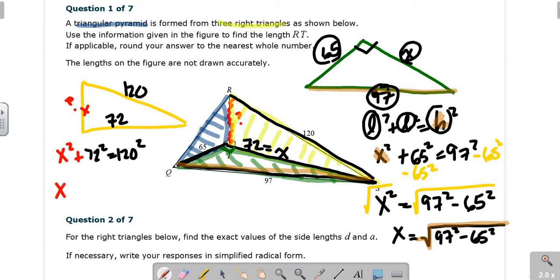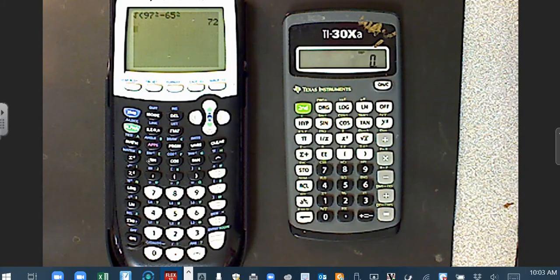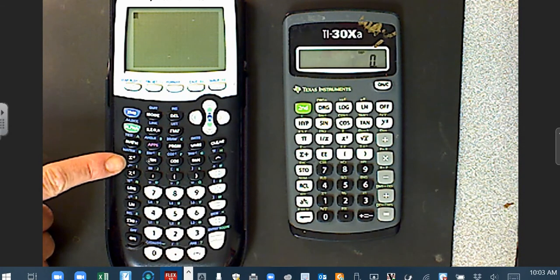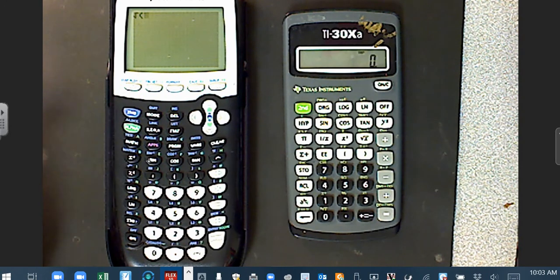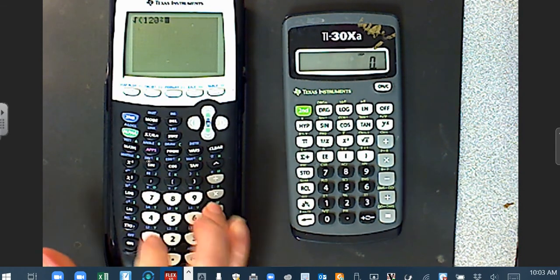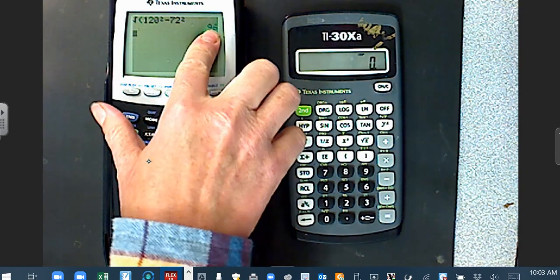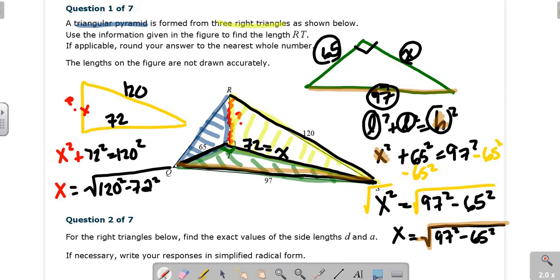Therefore, your X is going to ultimately equal the square root of 120 squared minus 72 squared. I now have X isolated. So it's 120 squared minus 72 squared, square root. So your giant square root button's right there. Second function square root, and we do 120 squared minus 72 squared, enter. 96. So our X is 96.